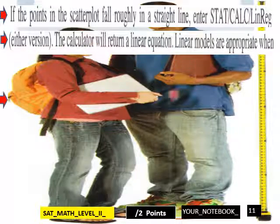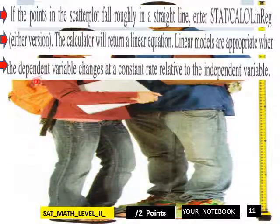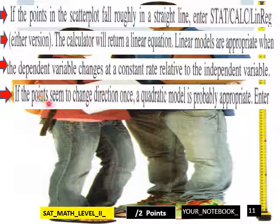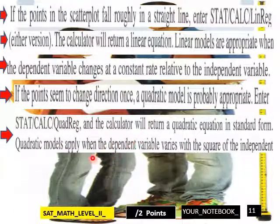If the points in the scatter plot fall roughly in a straight line, enter stat calc linear regression, either version. The calculator will return a linear equation. Linear models are appropriate when the dependent variable changes at a constant rate relative to the independent variable. If the points seem to change direction once, a quadratic model is probably appropriate. Enter stat calc quadratic regression and the calculator will return a quadratic equation in standard form.